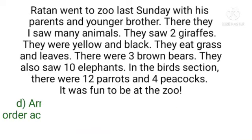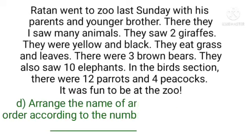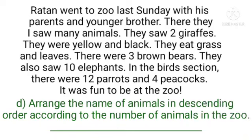Now last, number four: arrange the names of animals in descending order according to the number of animals seen in the zoo. We have three animals — giraffes, bears, and elephants. You have to arrange all the animal names according to their numbers from this story in descending order. This one is your homework — you will do the answer by yourself.